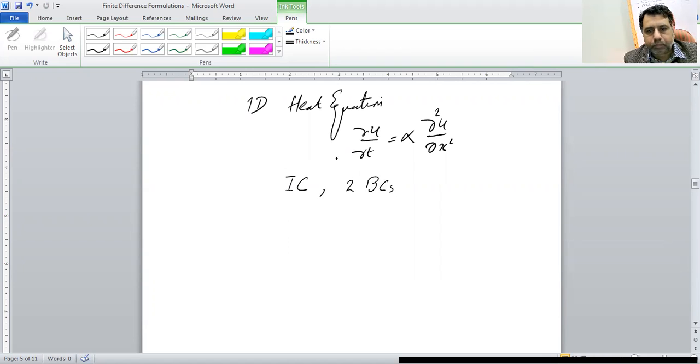If you recall the previous lecture, we have developed finite difference formulations for first order and second order partial derivatives. For a first order partial derivative, we could have three types of differencing: forward differencing, backward differencing, or central differencing. Based on the differencing chosen, we could develop different schemes.